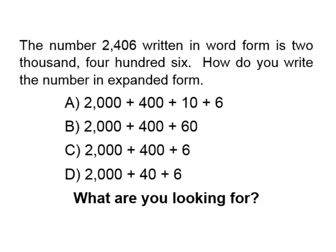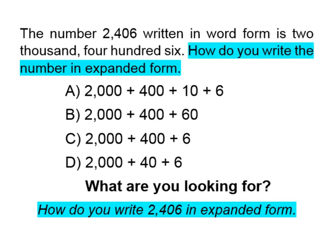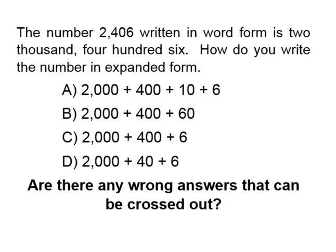What are we looking for? We are looking to find how to write two thousand four hundred six in expanded form. Let's see if there are any problems we can cross out. Remember, whenever you are solving a multiple choice problem, take a moment to see if there are any obvious wrong answers you can cross out. Crossing out wrong answers before you begin to solve will help increase your chance of getting the problem right.